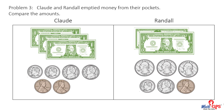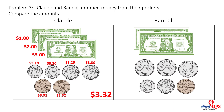Problem three. Claude and Randall emptied money from their pockets. Compare the amounts. Count with me to find Claude's amount: one dollar, two dollars, three dollars, three ten, three twenty, three twenty-five, three thirty, three thirty-one, three thirty-two. Claude has three dollars and thirty-two cents.